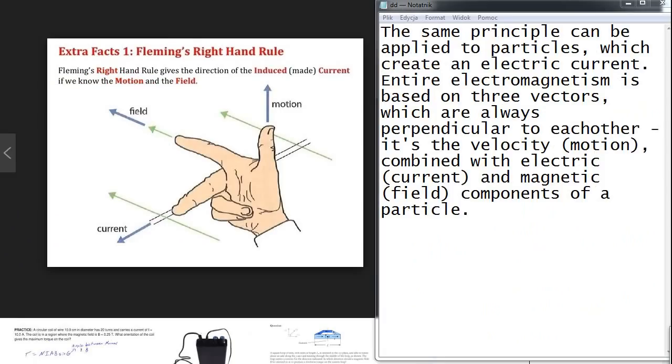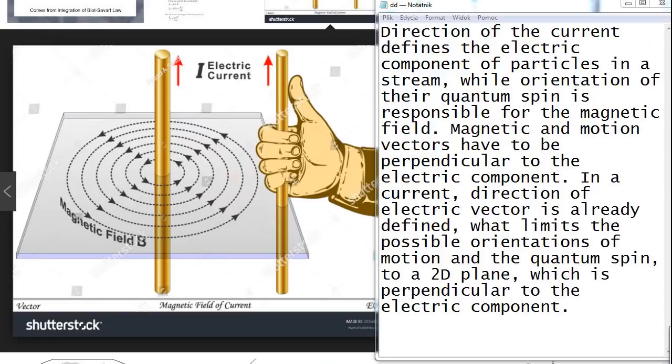The same principle can be applied to particles which create an electric current. Entire electromagnetism is based on three vectors, which are always perpendicular to each other. It's the velocity combined with electric and magnetic components of a particle. Direction of the current defines the electric component of particles in a stream, while orientation of their quantum spin is responsible for the magnetic field. Magnetic and motion vectors have to be perpendicular to the electric component.